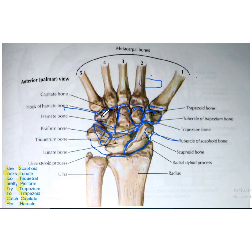This hook is specific to the hamate bone — no other bone has a hook. In the next video, we will discuss the side determination of the scaphoid, capitate, and hamate bone.